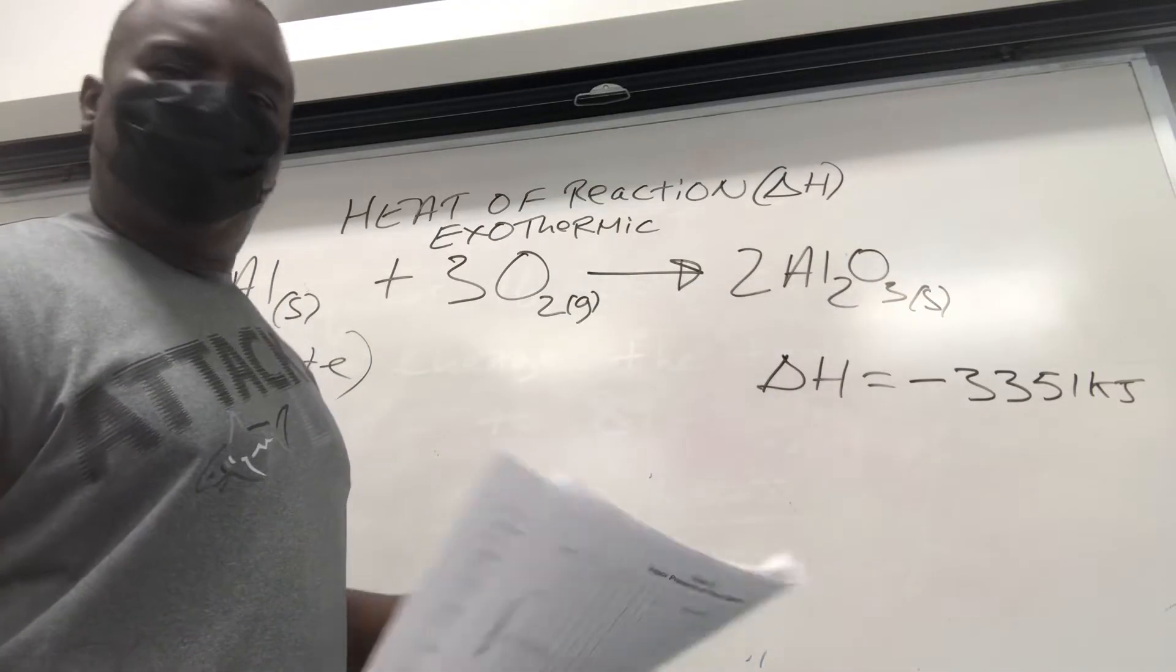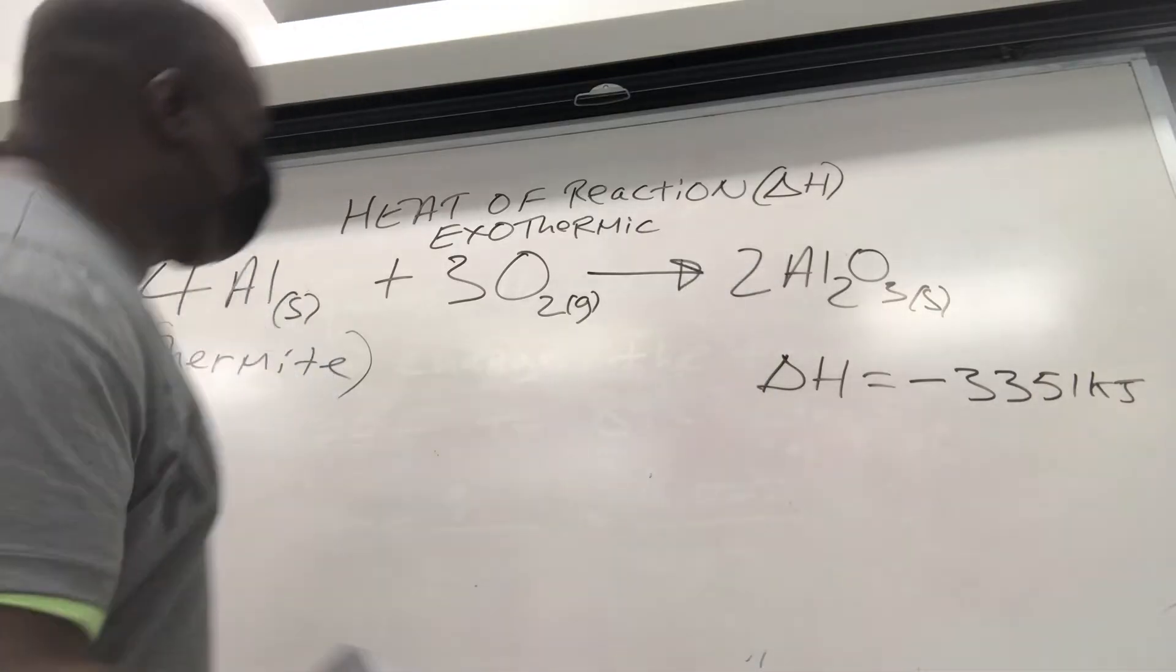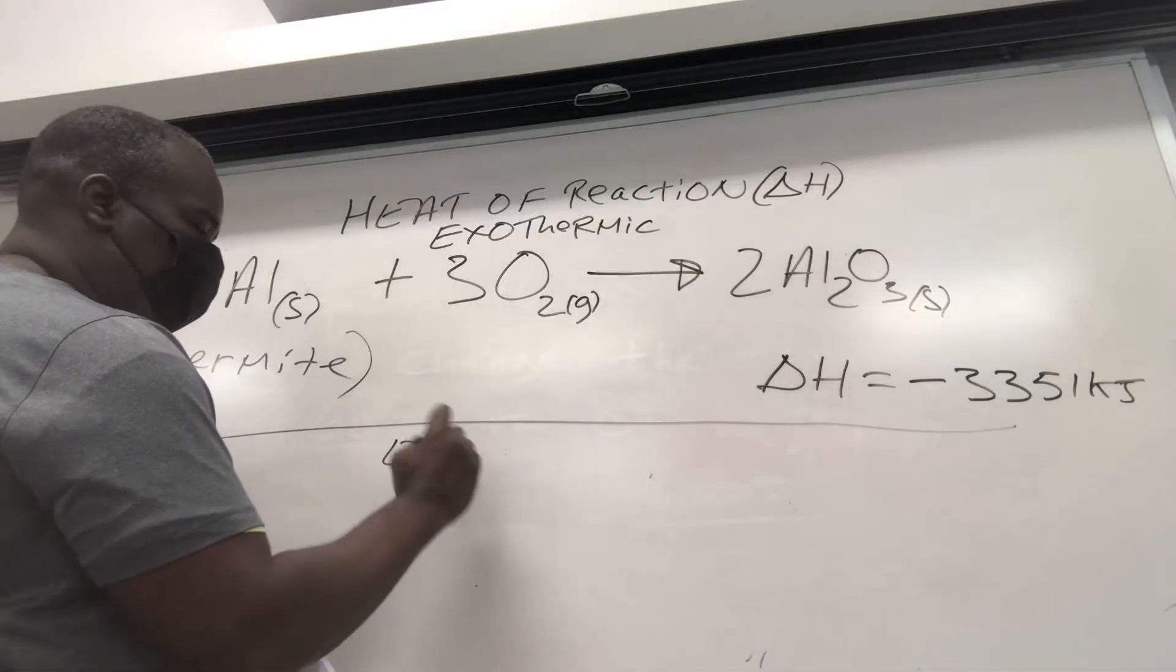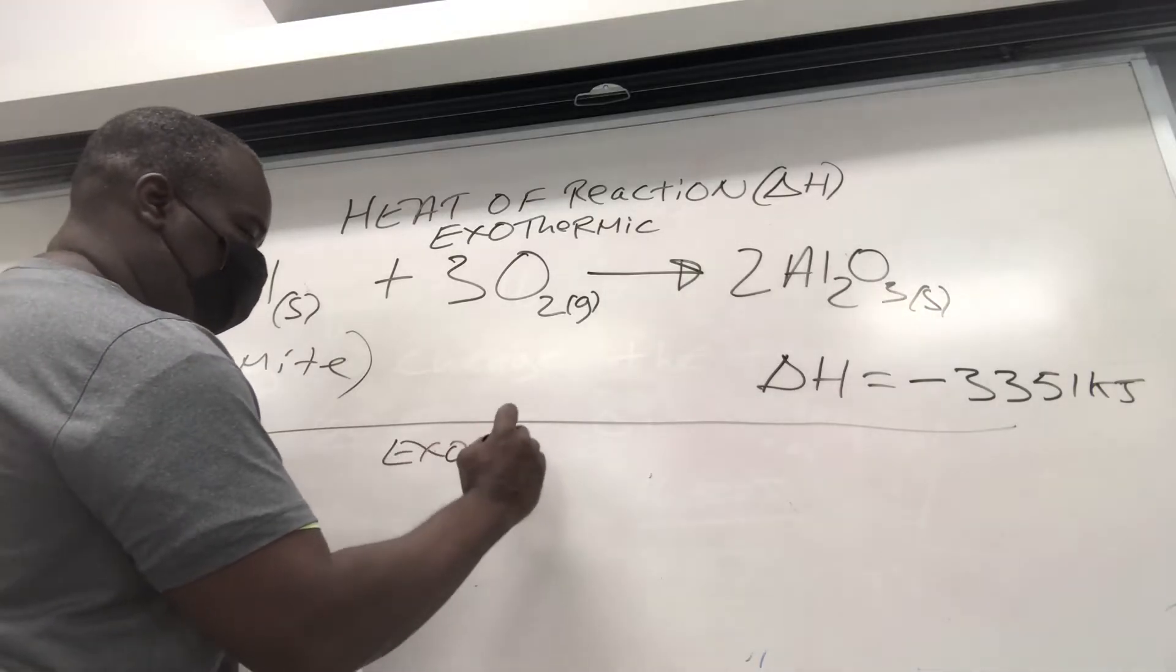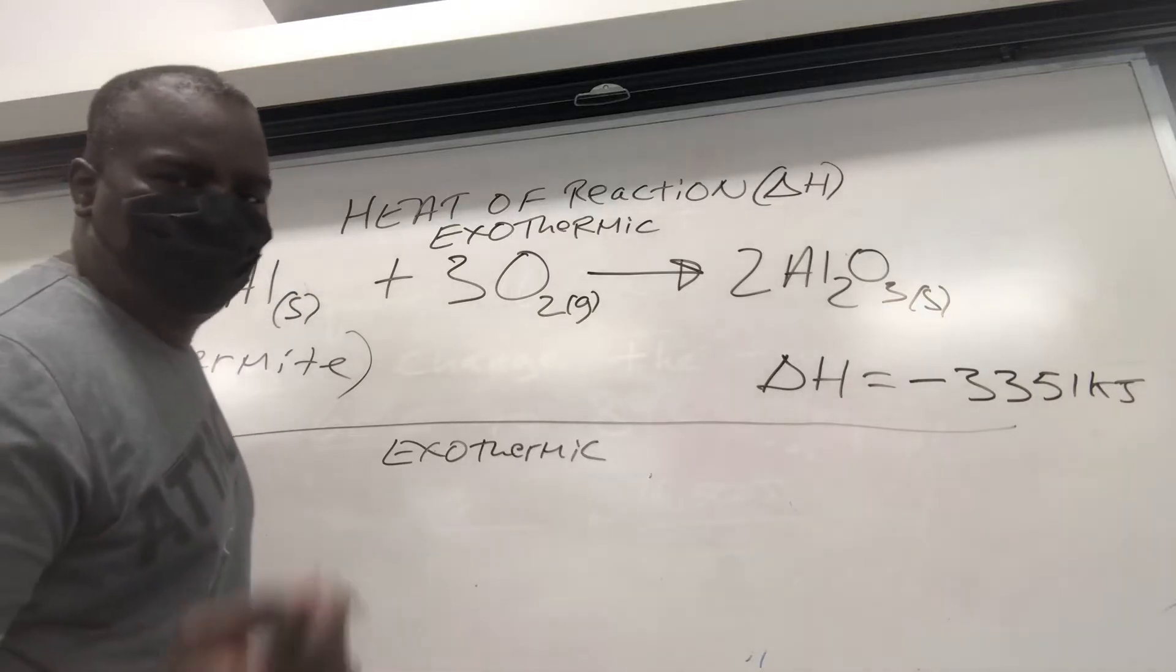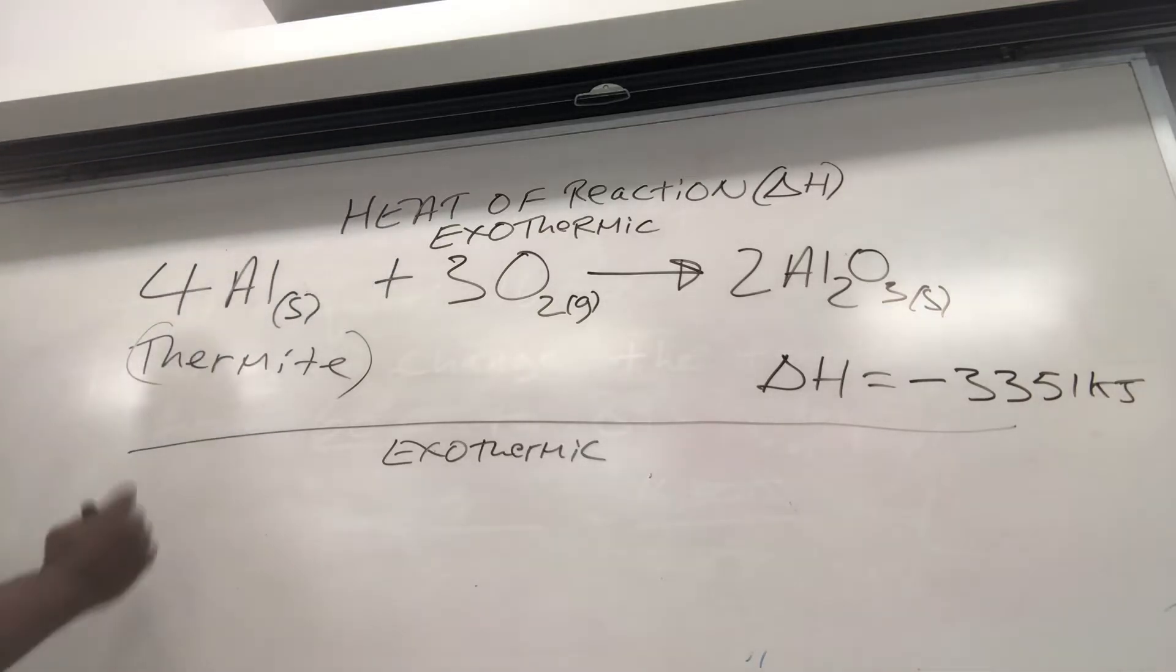So once again, if you know one, you know the other. So for exothermic, write it down someplace. For exothermic, in terms of the heat, in terms of the delta H value of heat, you're going to write down 4AL,